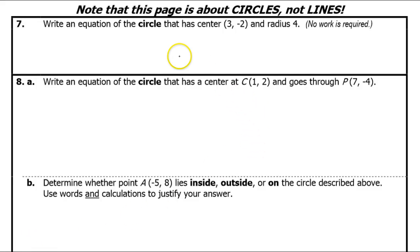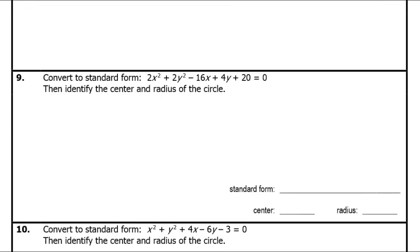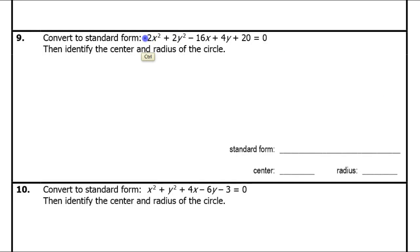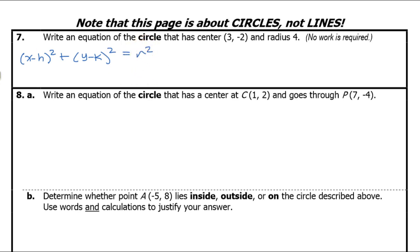In this video, I will show you how to write the equation of a circle in standard form if you're given the center and the radius. Then I will show you how to write the equation of a circle if you're given the center and a point on the circle. Then how to determine whether a point lies inside, outside, or on a circle. And finally, how to convert the general form equation of a circle into standard form. This is general form — notice there are no parentheses. Standard form is x minus h squared plus y minus k squared equals r squared.